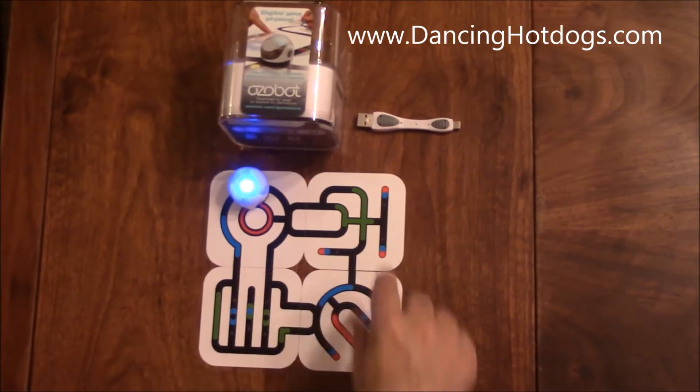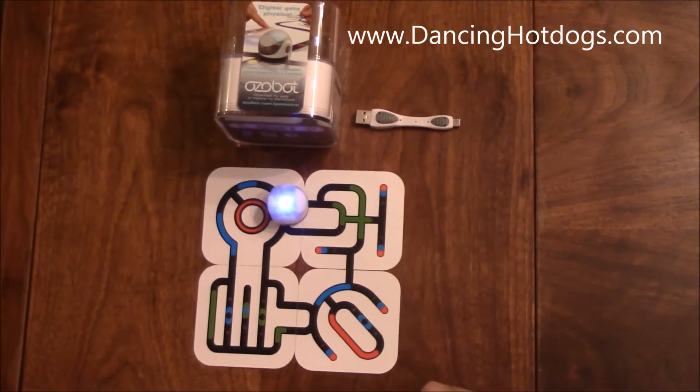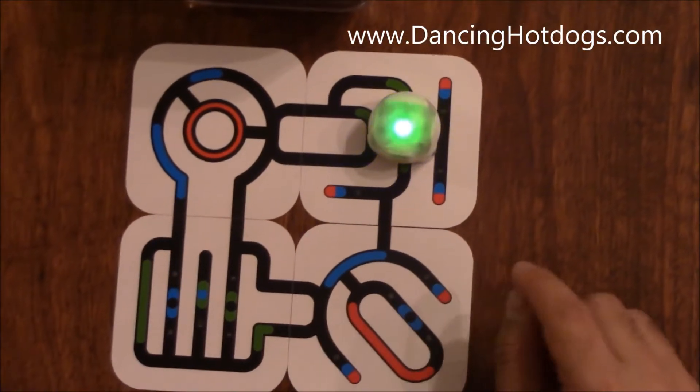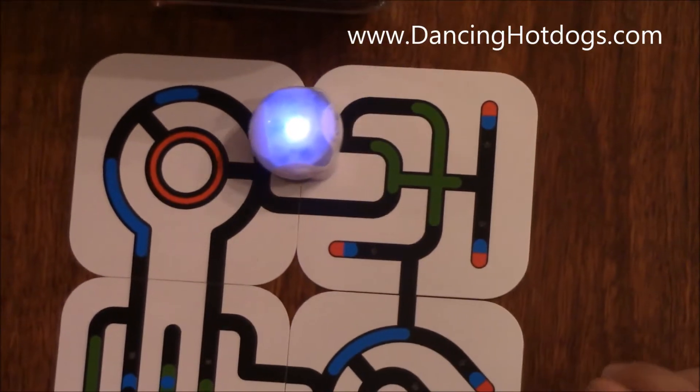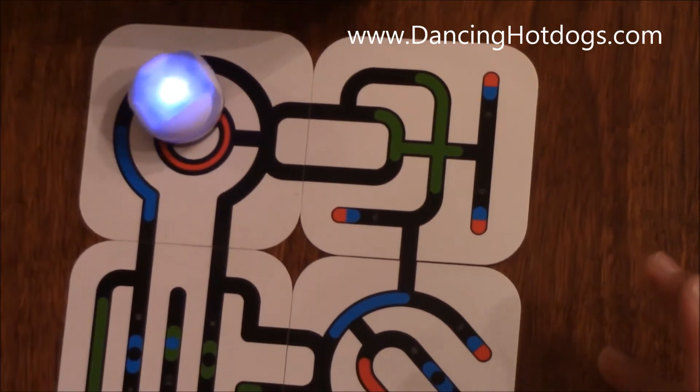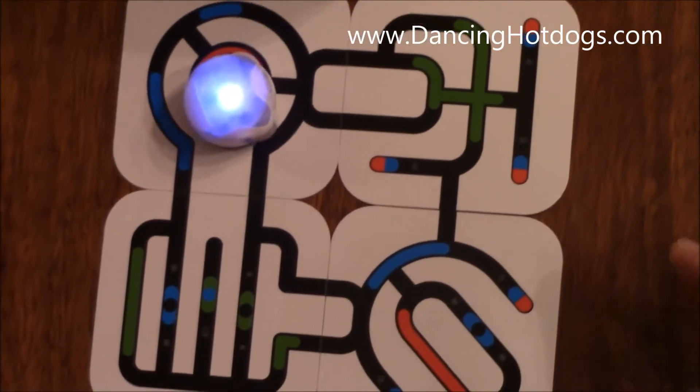As you can see, it comes with this little track for the Ozobot to follow. Ozobot follows by using color codes to basically tell it where to go and what to do. These color codes are pretty generic but very easy to follow, so anyone can really figure it out and have a lot of fun.